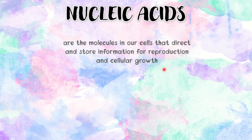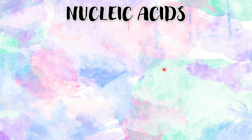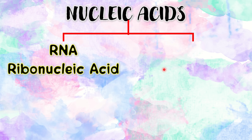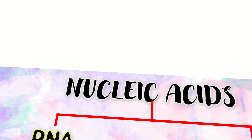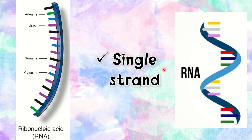Nucleic acids are the molecules in our cells that direct and store information for reproduction and cellular growth. There are two types of nucleic acids. The first is RNA, which stands for ribonucleic acid. The 'ribo' stands for the type of sugar used, which in this case is called ribose. RNA has only one single strand.